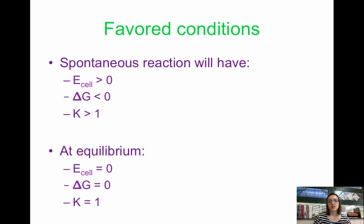Favored conditions with any reaction: spontaneous reactions are going to have a positive cell potential, a negative free energy value, and K, your equilibrium constant, should be greater than one. Because if K is greater than one, that means your products are favored. Think back to equilibrium. If K is greater than one, that means your products are favored, which means the reaction will proceed spontaneously.